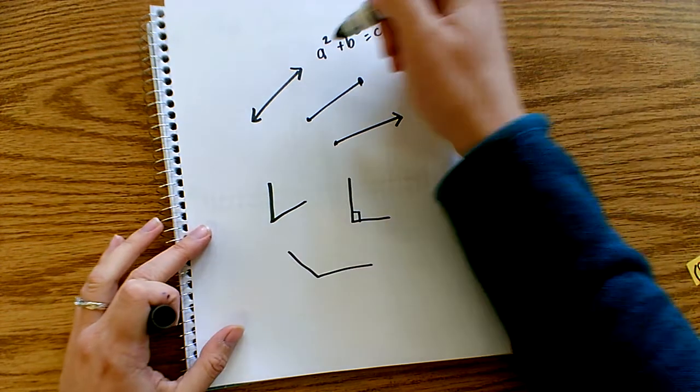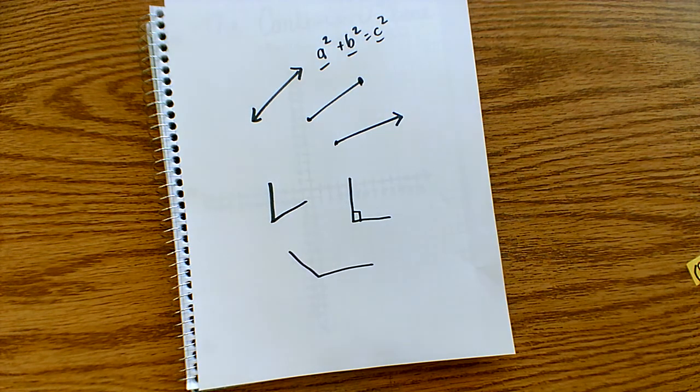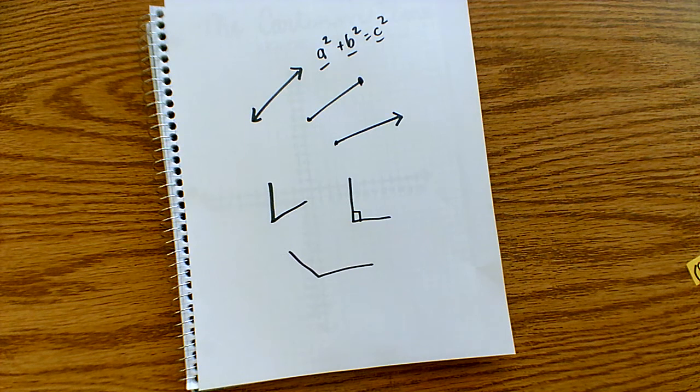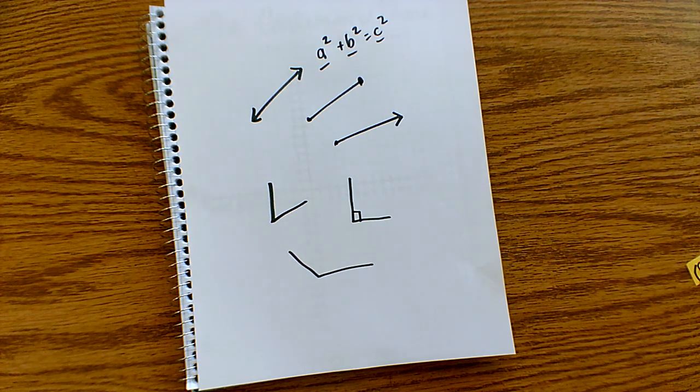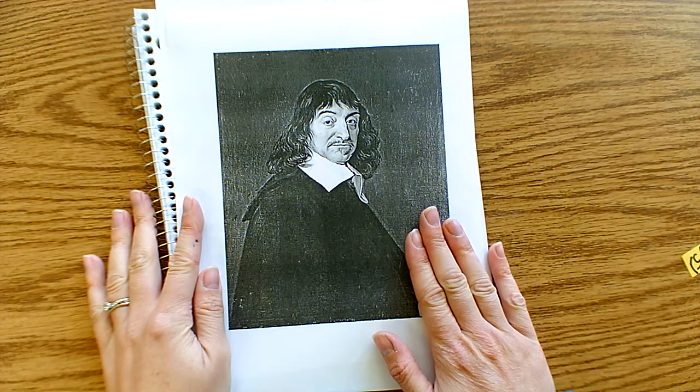Well, we use algebraic terms, the letters a, b, and c, to describe what the theorem, what that rule is saying. Well, today I'm going to tell you about one of the people that made algebraic rules for geometry possible. Not only was he a mathematician who was known as the father of analytical geometry, he was also a famous philosopher. His name? René Descartes.